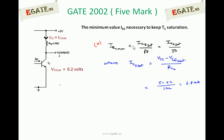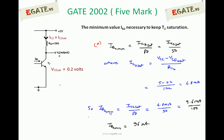Now we know the value of IC2 saturation. We can calculate IB minimum using IC2 saturation divided by 50. IB2 minimum equals IC2 saturation divided by beta, which is 4.8 milli amperes divided by 50, that is 9.6 milli amperes divided by 100, which equals 96 micro amperes. If the current flowing through the T2 transistor base is 96 micro amperes or greater, then T2 will definitely be in saturation.